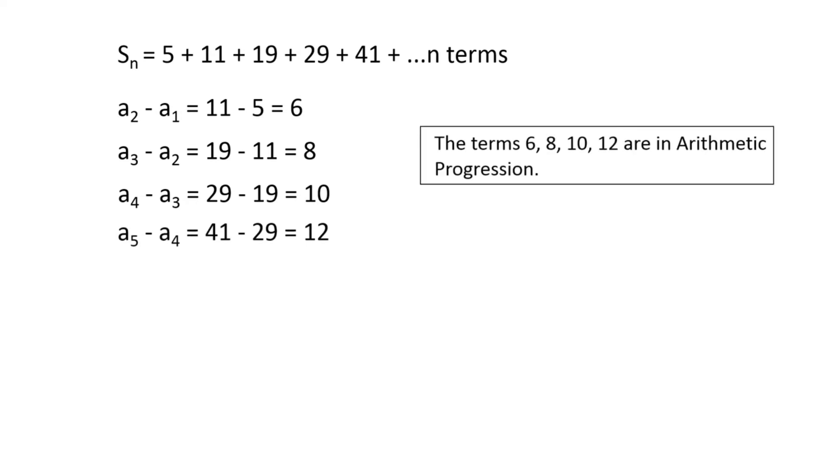Observe that the difference between the consecutive terms in this series is an arithmetic progression. Therefore, the difference between the nth term and (n-1)th term of the series is the (n-1)th term in the sequence 6, 8, 10, 12 and so on.